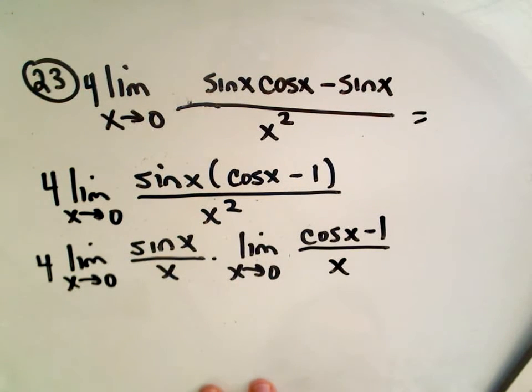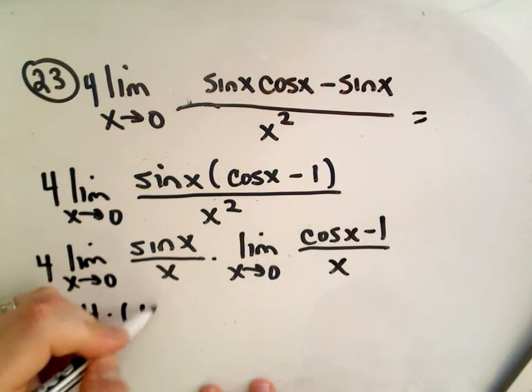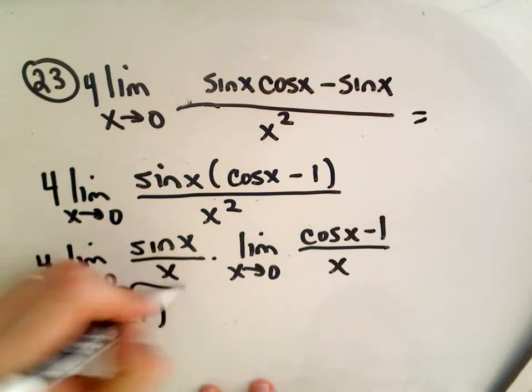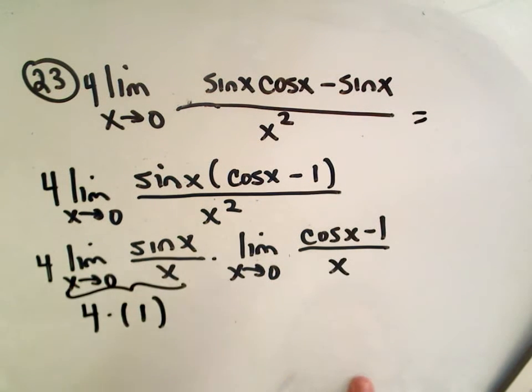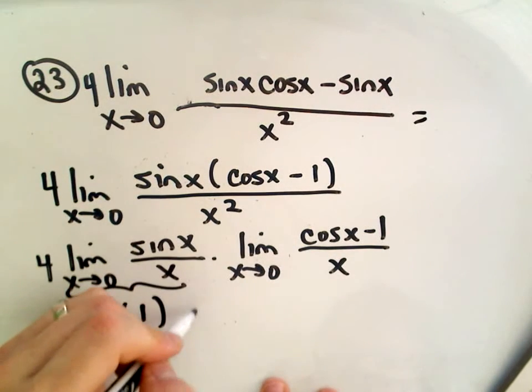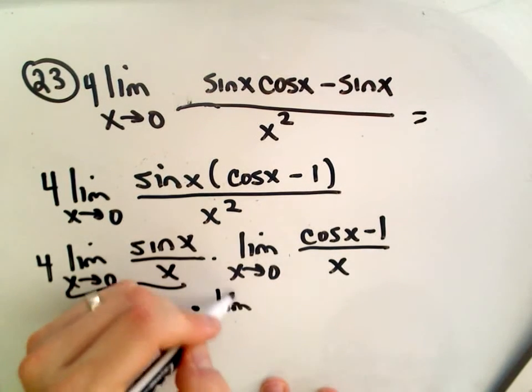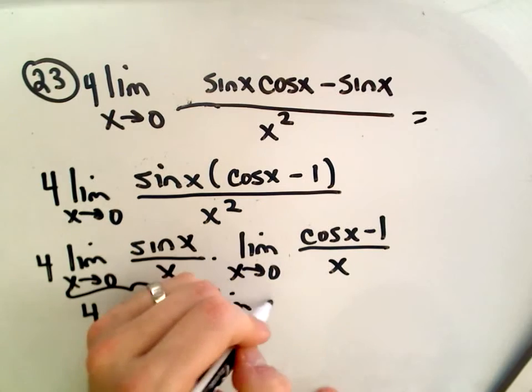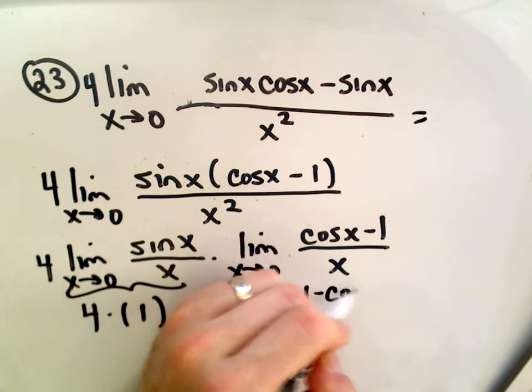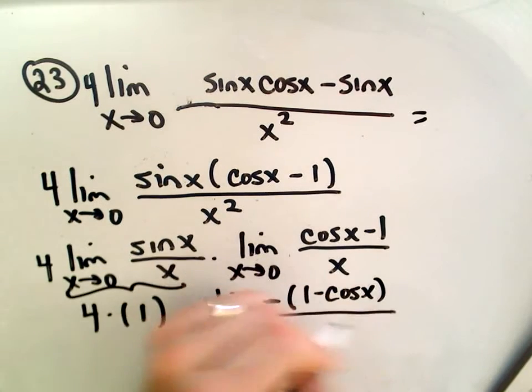Okay, we saw that the limit as x approaches 0 of sine x over x, we just now just saw, well, we didn't justify it, but this limit equals 1. So the question is, we saw that 1 minus cosine x equals 0. Notice I can factor a negative out of the top.